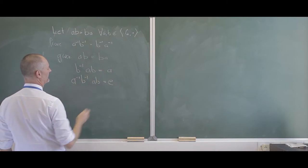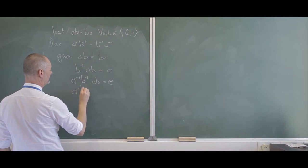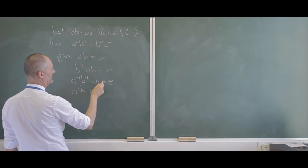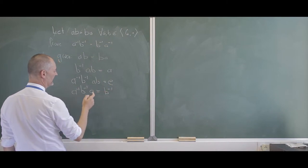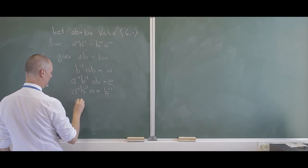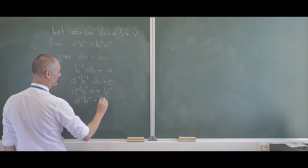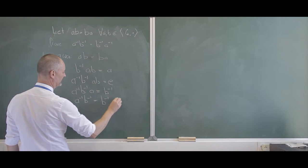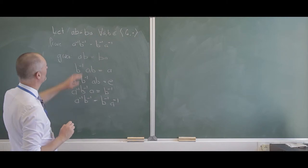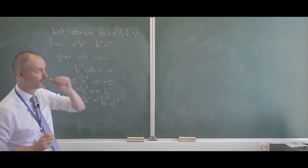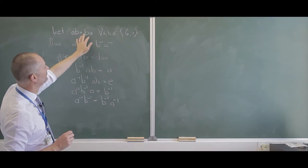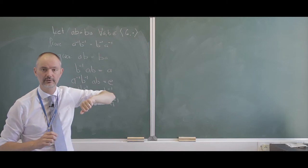Now let's take the B inverse to that side, so A inverse B inverse A equals E times B inverse. Eventually, taking A inverse on both sides, I have A inverse B inverse equals B inverse A inverse. As simple as that — if we have this commutativity property for this special group, then the inverses of these two elements will also commute.